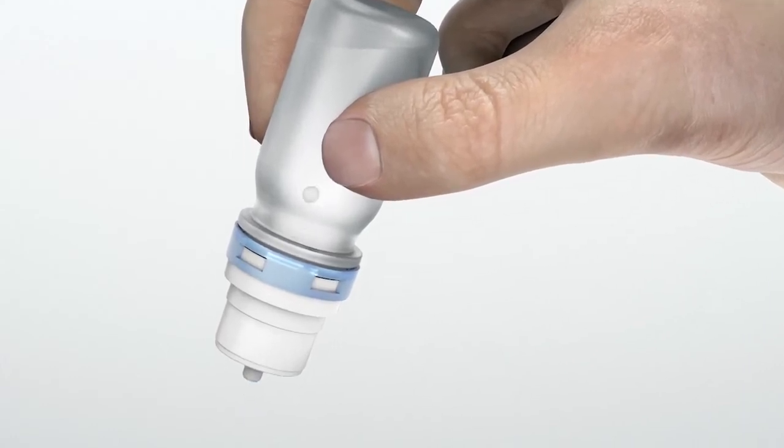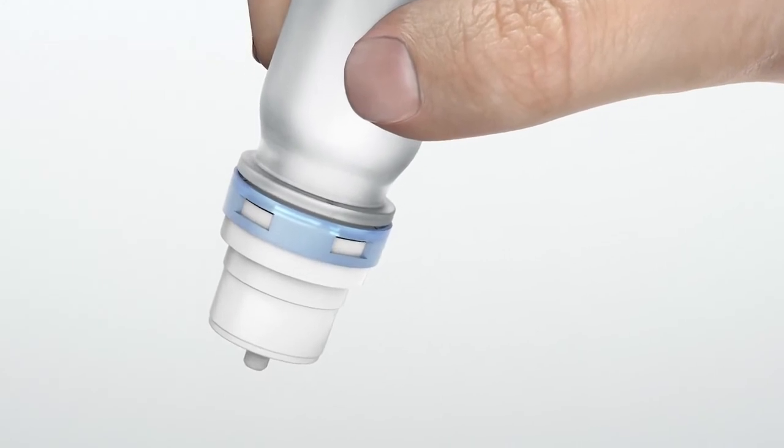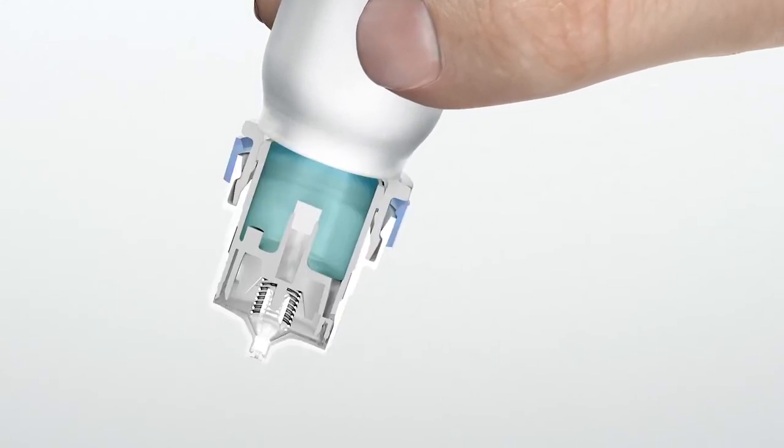The moment the consumer squeezes the bottle, the pressure inside the system increases. This pressure makes the product flow into the small delivery channels inside the OSD. The liquid accumulates in the area just inside the tip.